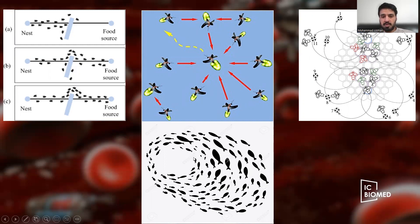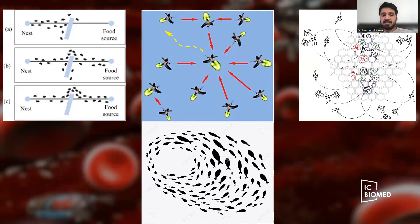Another example is a fish swarm shown at the bottom of this slide. Fish swarm to protect themselves from predators. If a predator tries to attack, they create a confusion matrix, causing the predator to fail to catch any fish. Notably, within the swarm, the fish do not collide with each other — they maintain equal distances between all individuals.